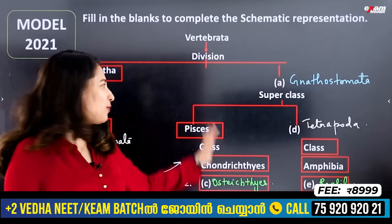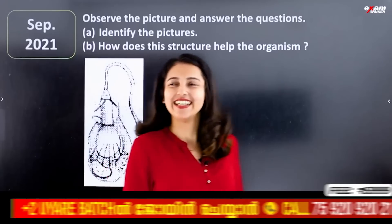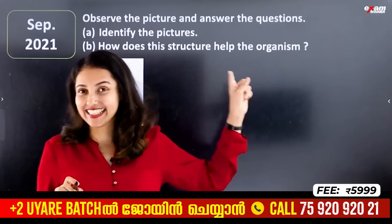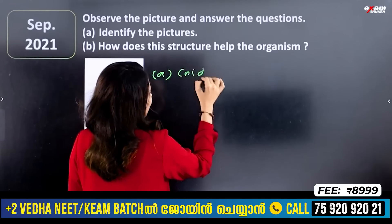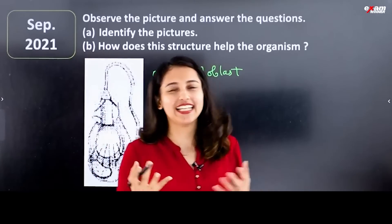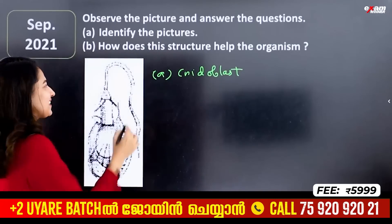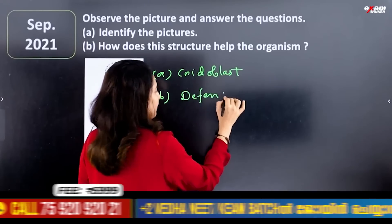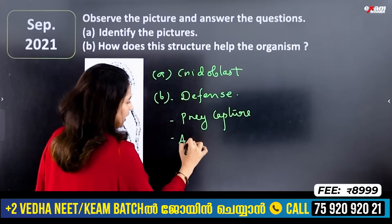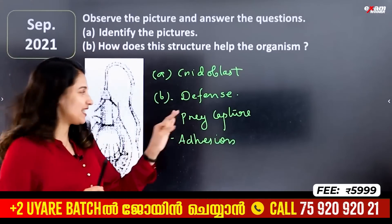This is a repeated and very important question — identify the picture. We call it a nematocyst, also known as a cnidoblast. How does this structure help? It helps in defense and prey capture. This is the function of the nematocyst structure found in cnidarians.